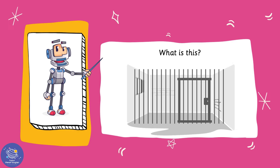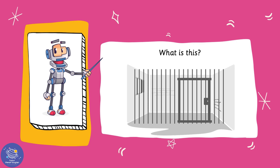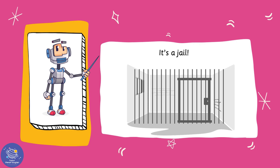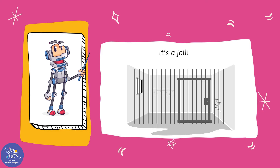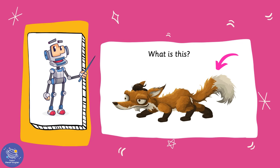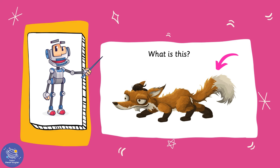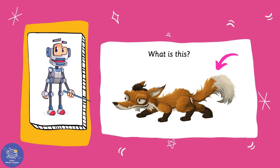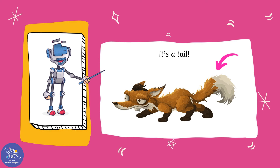What is this? It's a jail. Well done, it's a jail. What is this? It's a tail. It's a tail.